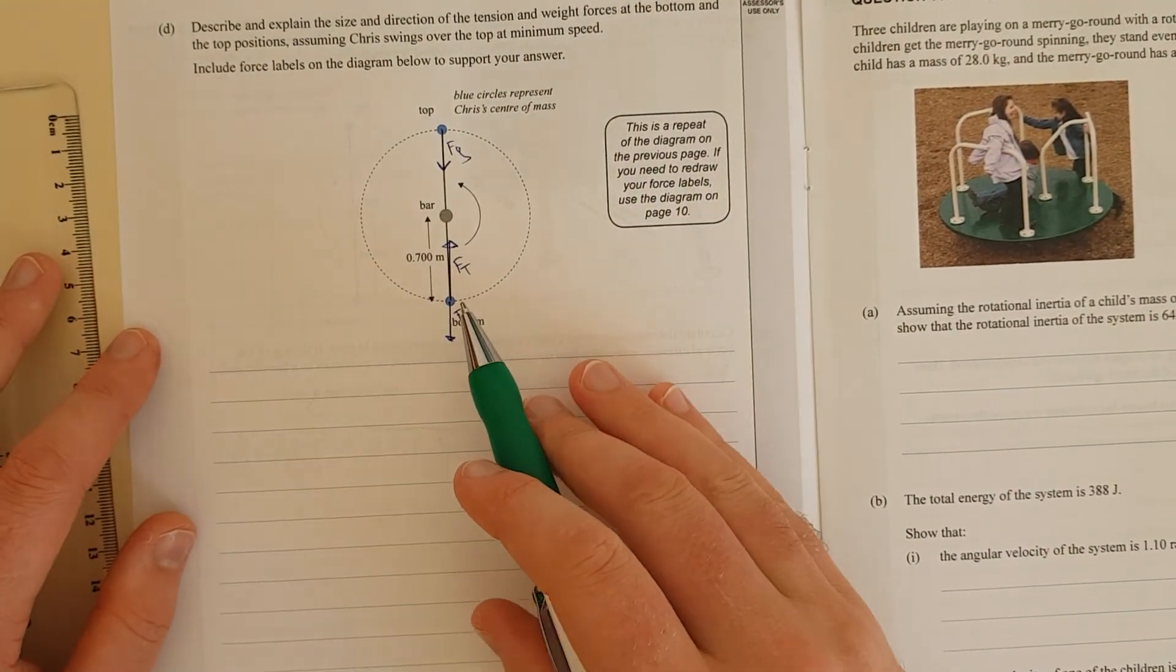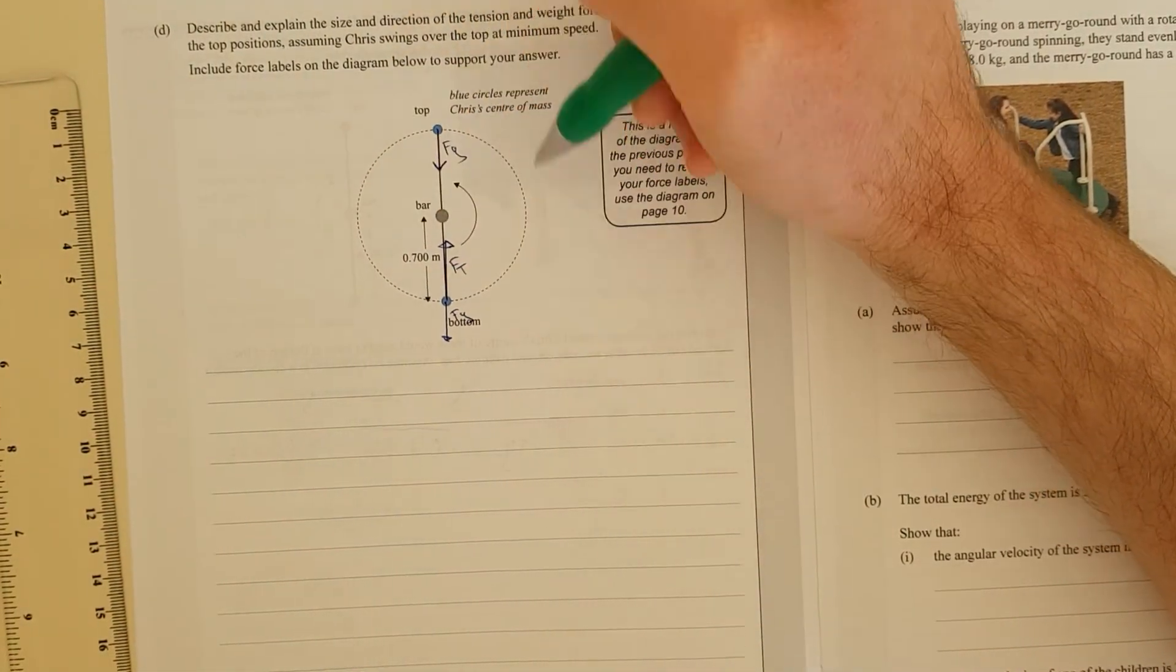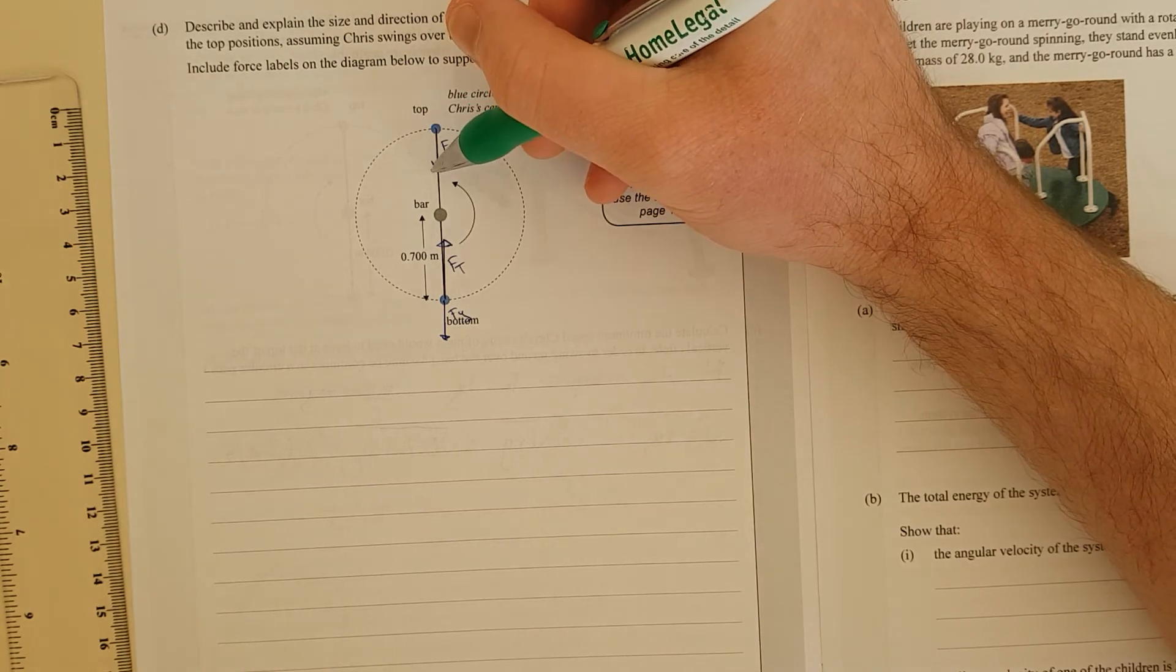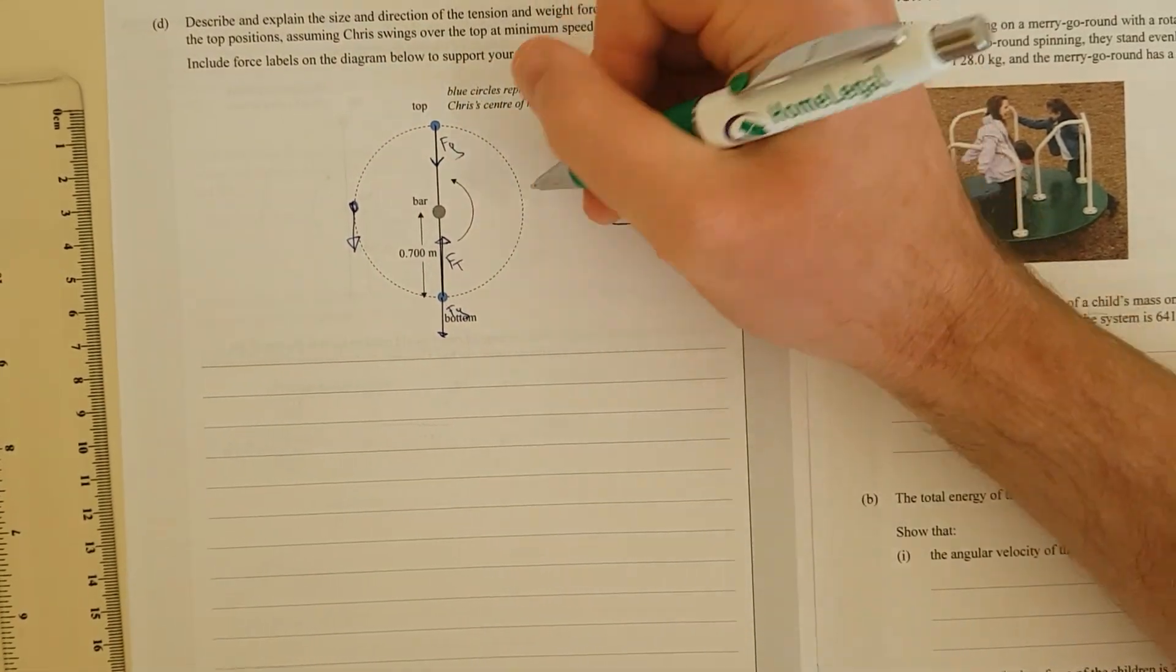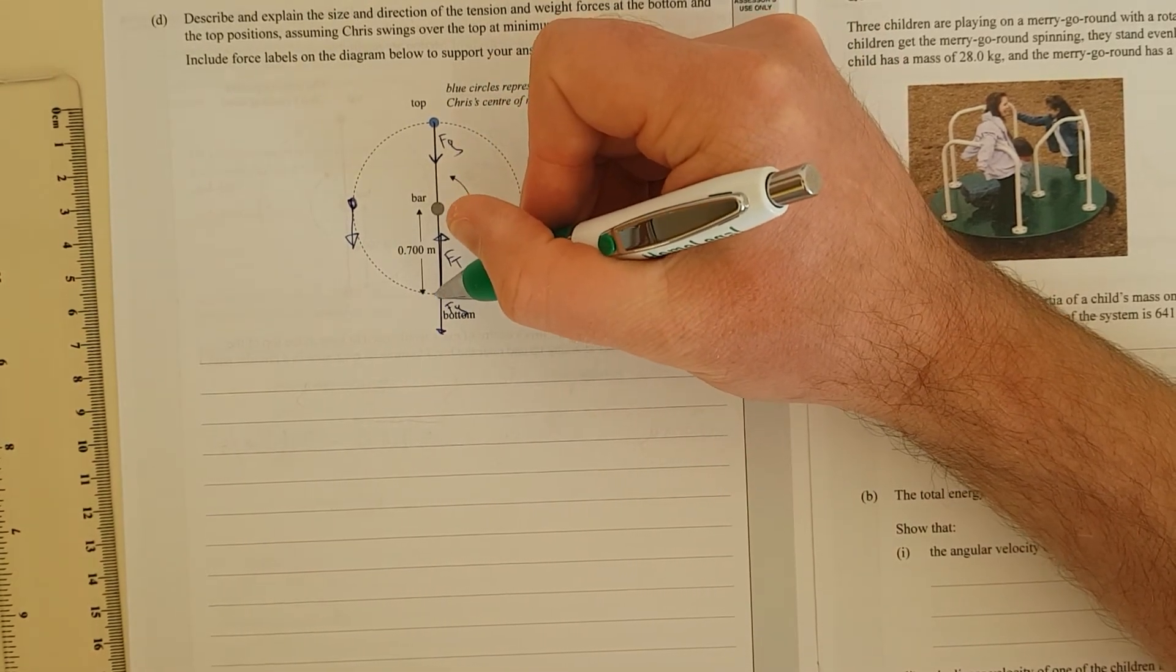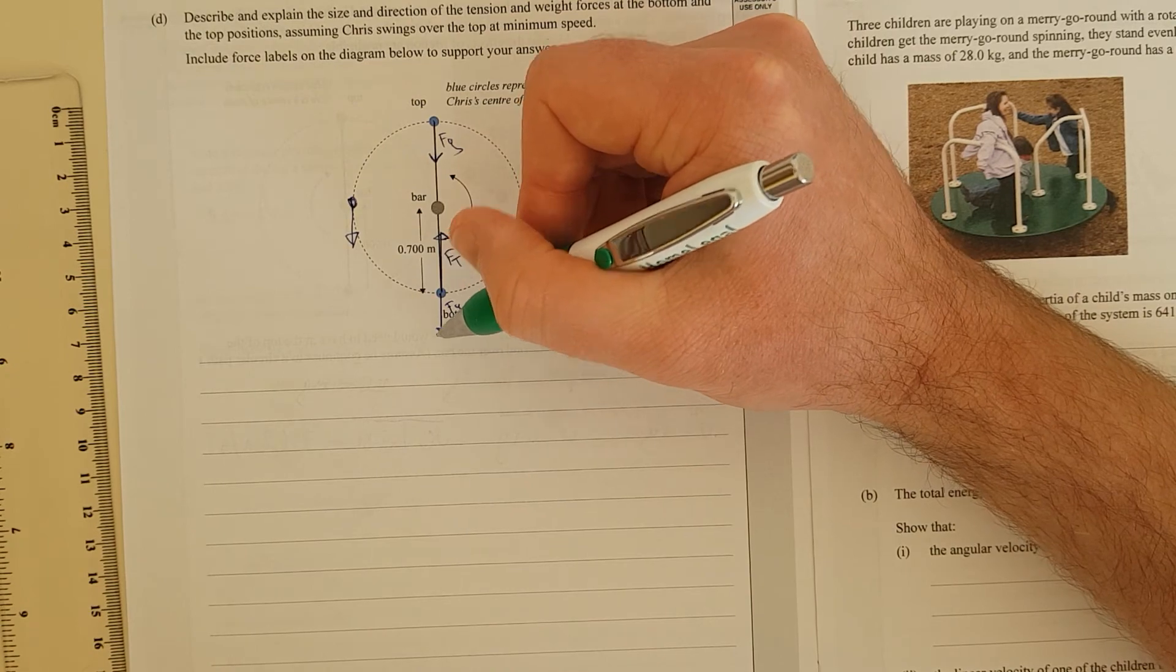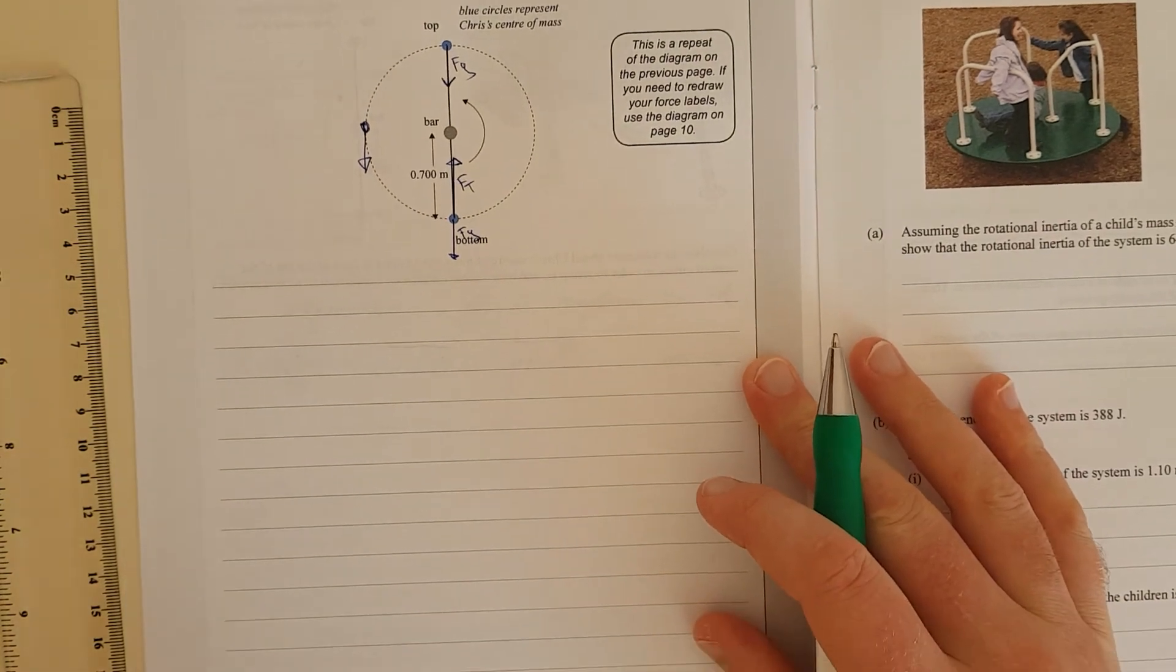So this is the free body diagram. At the top, there always needs to be a net force pointing towards the center of the circle because it's spinning. Fg always points down—if Chris was over here, his gravitational force always points downwards. At the bottom, Chris still needs to go in a circle, so the tension force needs to not only make him go in a circle but also overcome gravity. So his tension force needs to be bigger than gravity.